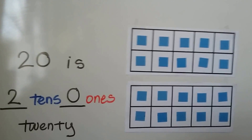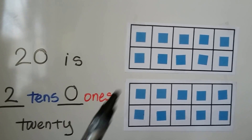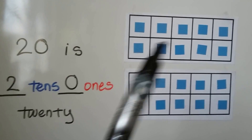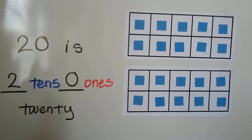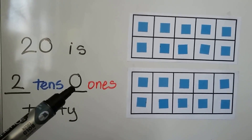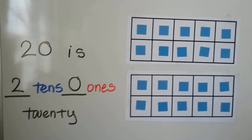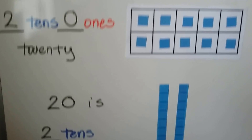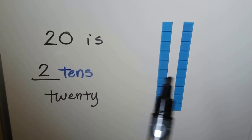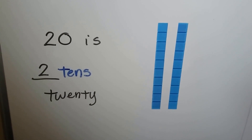Here we have two ten frames that are full. There's ten in each ten frame — ten and ten. That means we have two tens. Two tens and zero ones is twenty. We have two tens and no ones. We can also look at it as a bar of ten and another bar of ten. That's two tens. That's twenty.